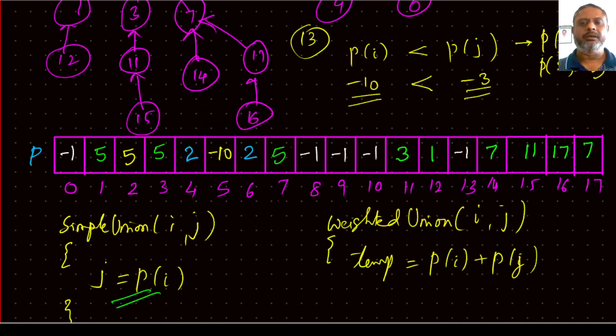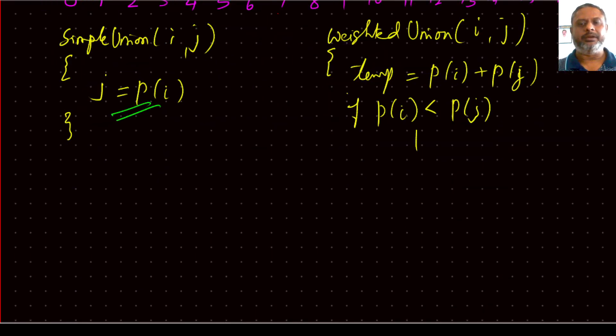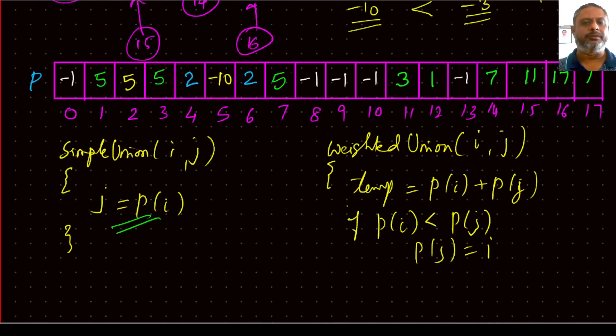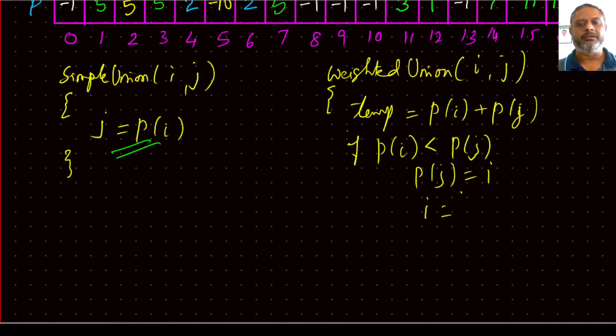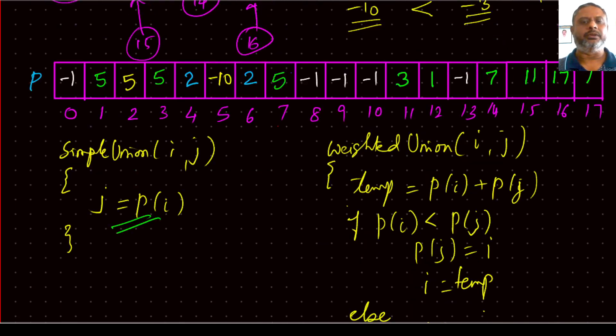Then if p of i is less than p of j, what we should do? p of j should be made i. So p of j is made i. And this value has to be changed. So i should be changed to temp. Else p of i should be made j. And j should be equal to temp. That's the simple logic we are going to use.